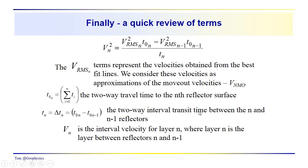This will be the two-way interval transit time between the n and n minus 1 reflectors. V_n is the interval velocity, again, for layer n, where layer n is the layer between reflectors n and n minus 1. It sits directly on top of the nth reflector.